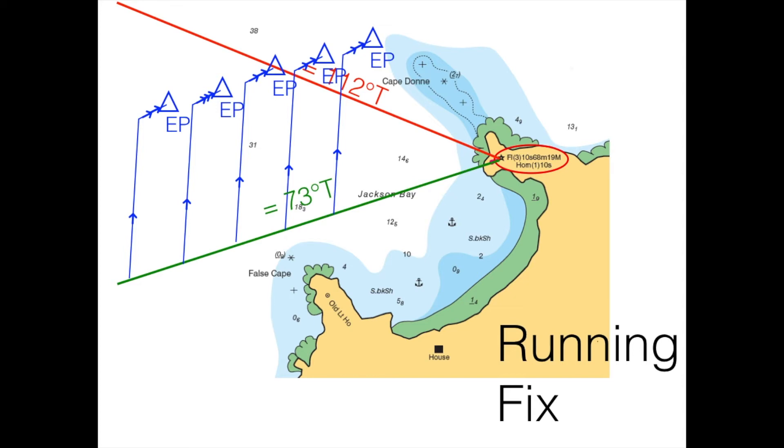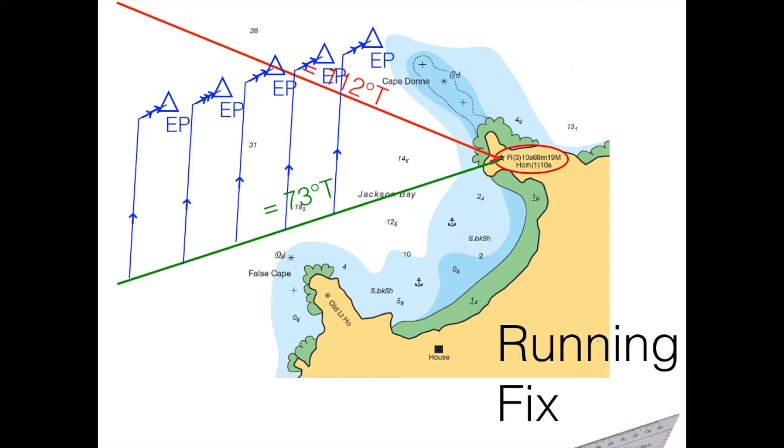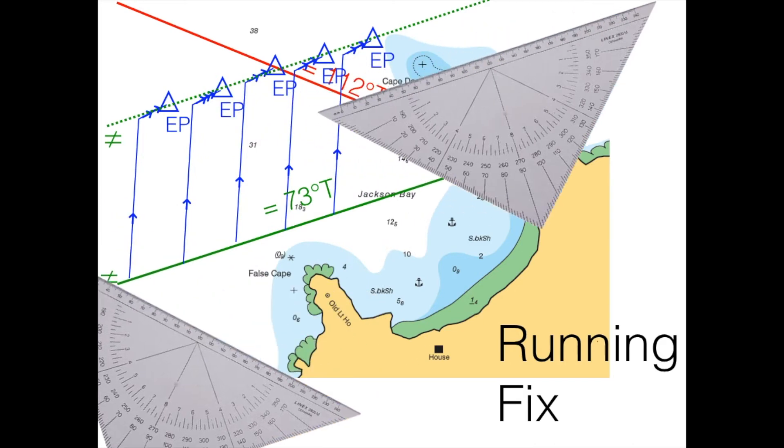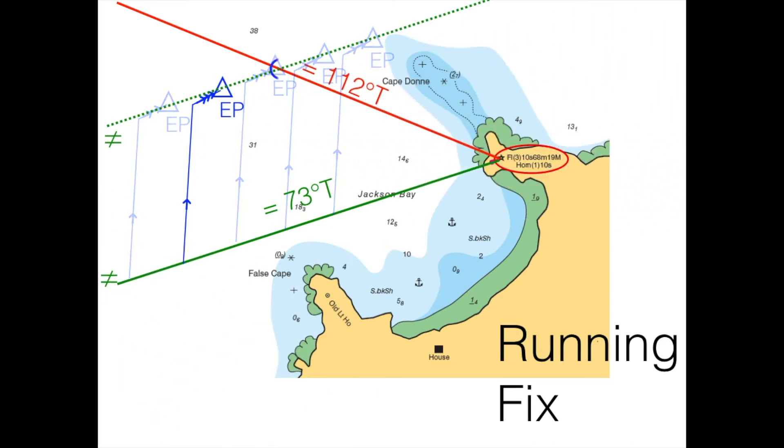And you can see that the third one makes the most sense, because the third one is the estimated position that is on the red line, the second bearing. So the easiest thing is that you take a parallel, you draw a parallel line from the green line to the green dotted line. Then you don't have to draw all these estimated positions more than once. You draw one estimated position, and then you move the green line in parallel to the green dotted line. And where the green dotted line crosses the red line, that's where we are. That's the fix. And this is called a running fix.